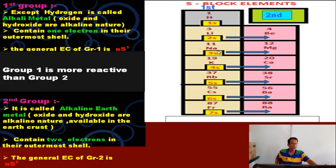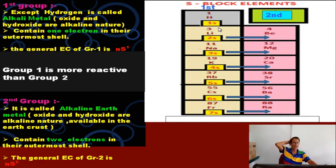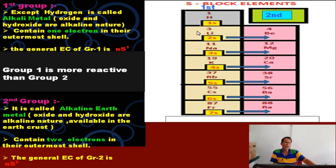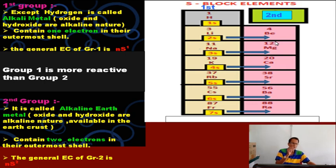The first group elements, except hydrogen, are called alkali metals: lithium, sodium, potassium, rubidium, cesium, and francium. These are S-block elements. Their general electronic configuration is nS¹ — meaning the last sub-shell contains one electron. So 1S¹, 2S¹, 3S¹, 4S¹, 5S¹, 6S¹, 7S¹ — each element in this group contains a single electron in the outermost S sub-shell.